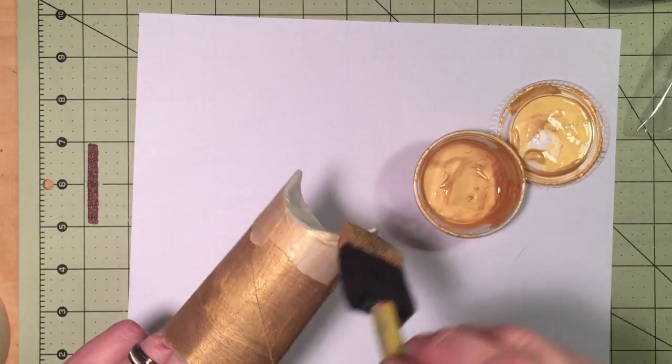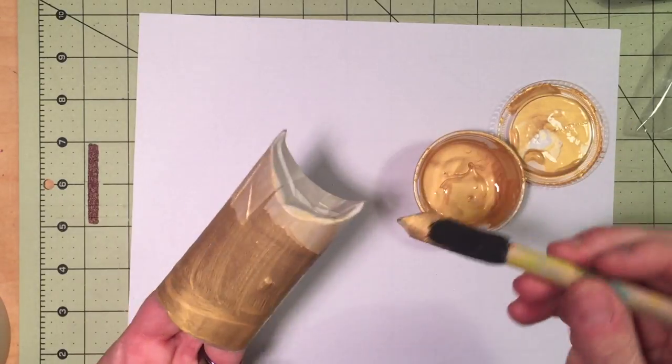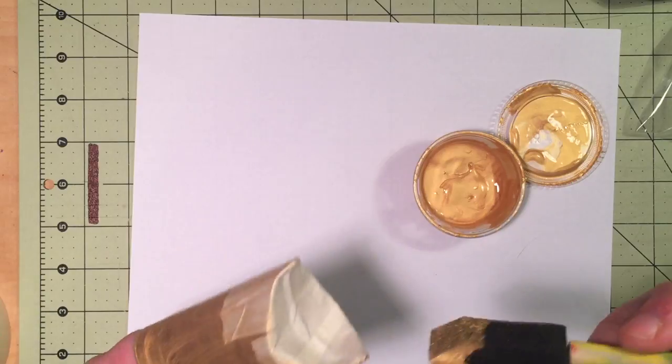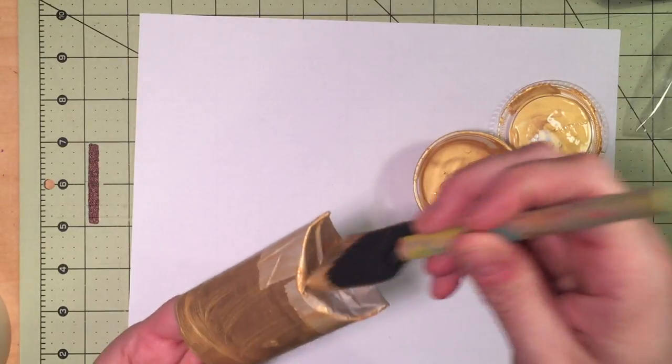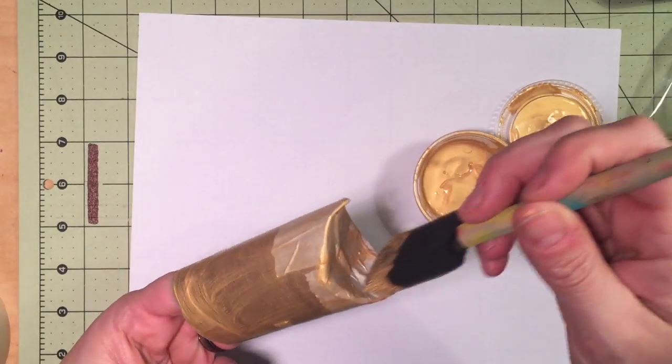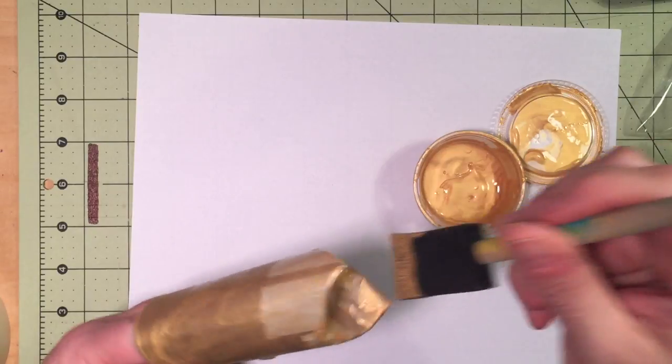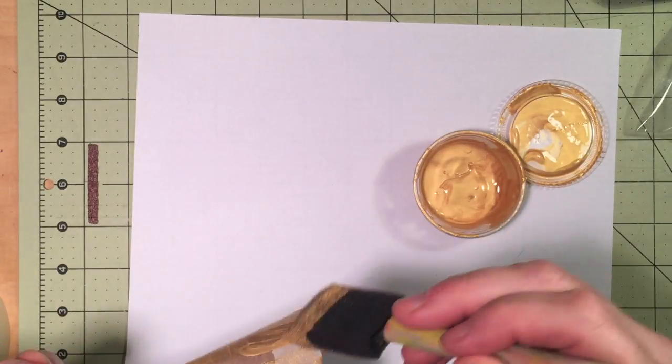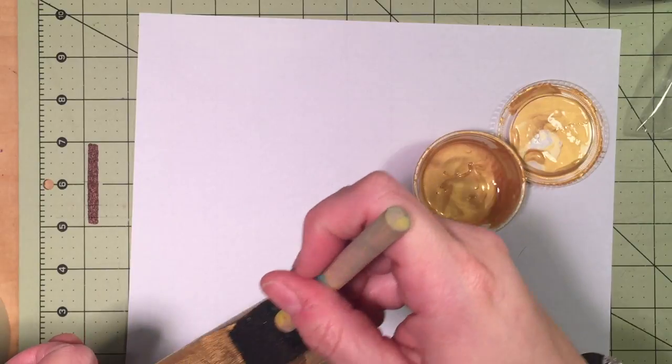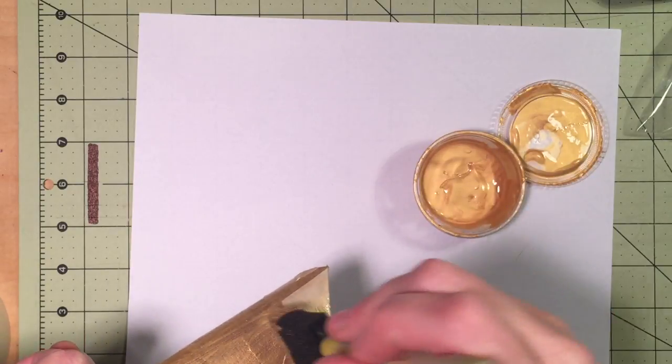When you're all done going around the edge of the tube, you're going to dab, dab, dab there between the ears. Make sure you get every little possible place that might show the brown cardboard.